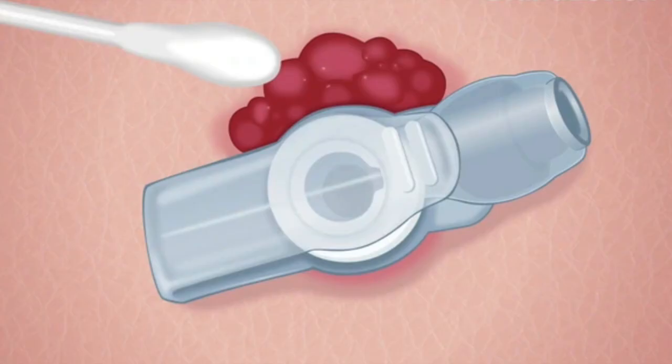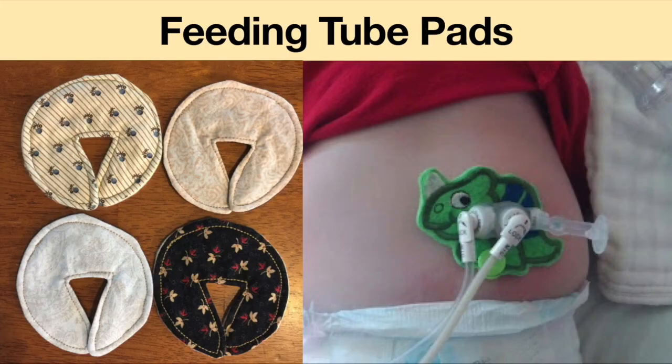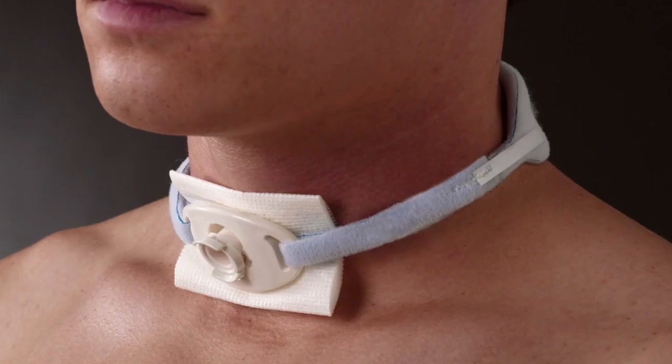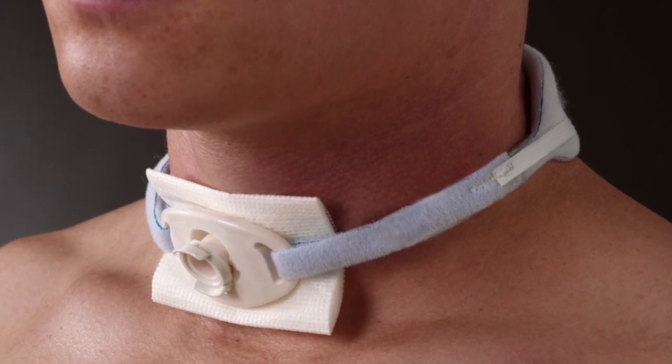Granulation tissue forms around devices which are not properly fitted. For indwelling devices, they should fit snugly. If the device is loose, this will damage the healthy tissue and cause granulation tissue to grow. For tracheostomy tubes, it is important the tracheostomy tube holder is pulled tight but not too tight — two fingers should fit between the tracheostomy tube holder and the neck. The area where the device touches the skin should be kept dry. For feeding tubes, products such as feeding tube pads will keep the site dry and prevent the feeding tube from irritating the skin. For tracheostomy tubes, gauze may be used to keep the tracheostomy dry.